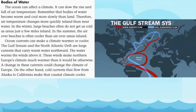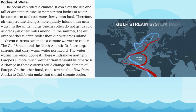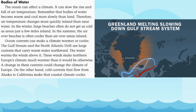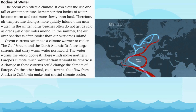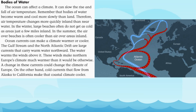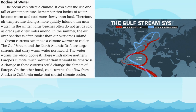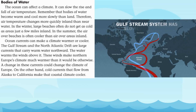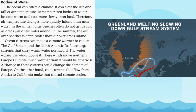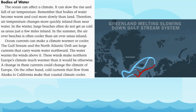Bodies of water can affect the climate. The ocean can slow the rise and fall of air temperature. Bodies of water become warmer and cool more slowly than land, so air temperature changes more quickly inland than near water. In the winter, large beaches often do not get as cold as areas just a few miles inland. In the summer, the air over beaches is often cooler than air over inland areas.